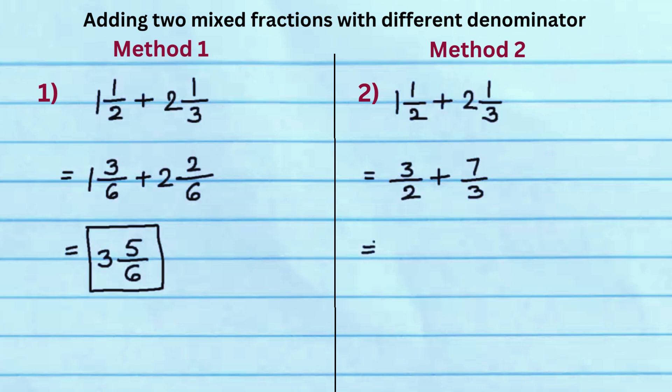Since denominators are different, find the LCM. Here LCM of 2 and 3 is 6. Rewrite the fraction using common denominator 6 to get 9 over 6 and 14 over 6.